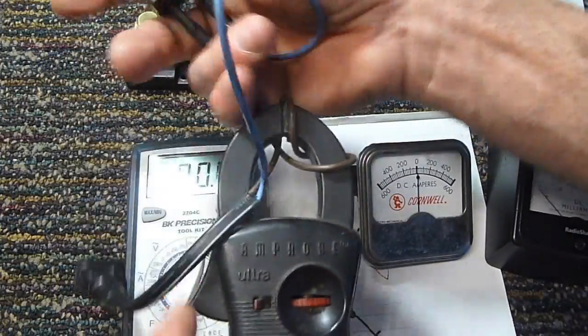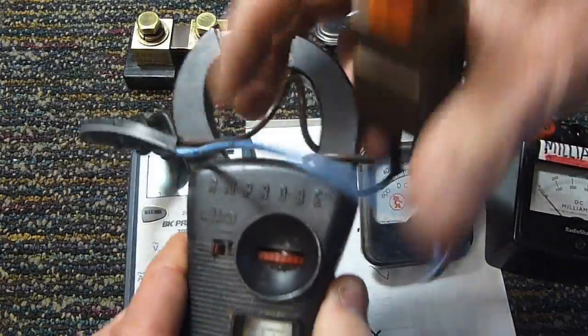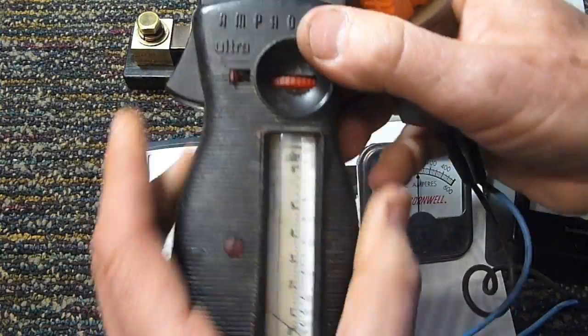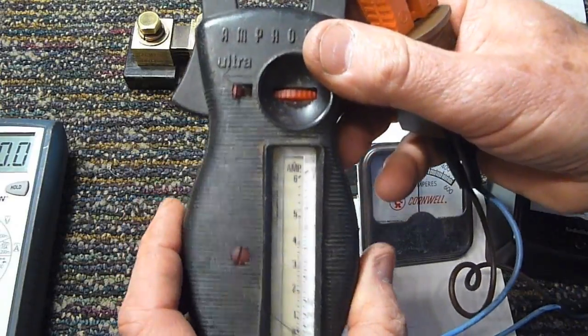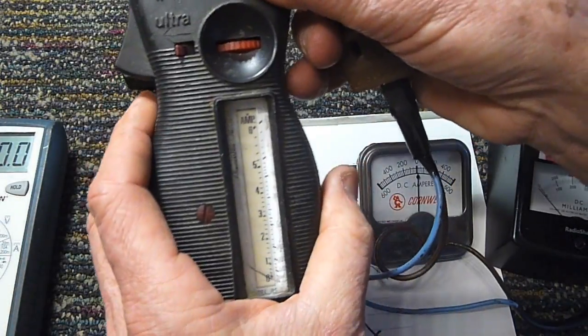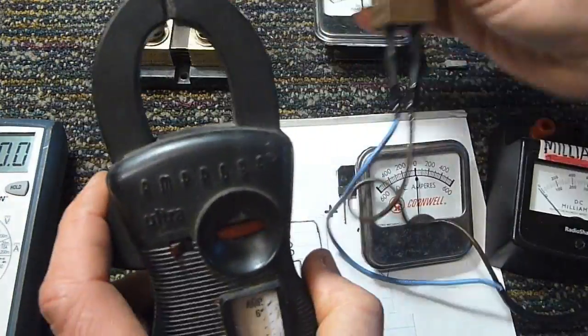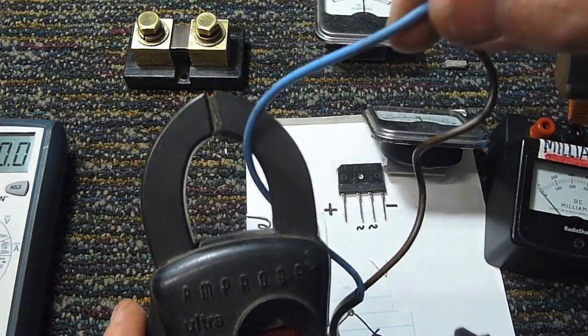Now here's one other kind of ammeter I use from time to time. This is an inductive ammeter and this is a pretty old one here. I really like these little gadgets so they come in handy every once in a while. This is for measuring AC amperes. And basically the way it works is you simply clamp it across one of the wires going to the load like this.